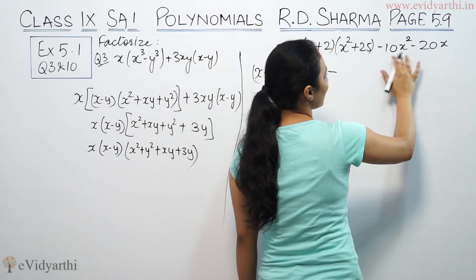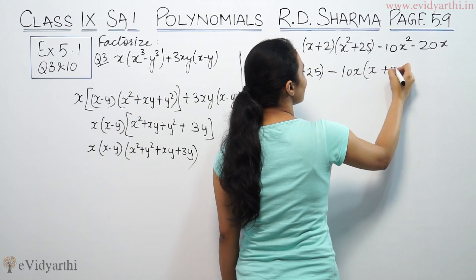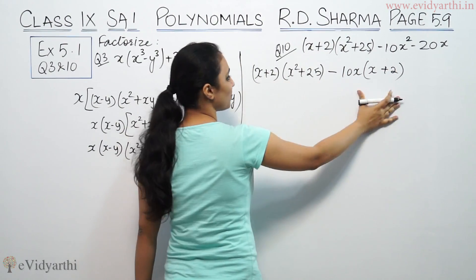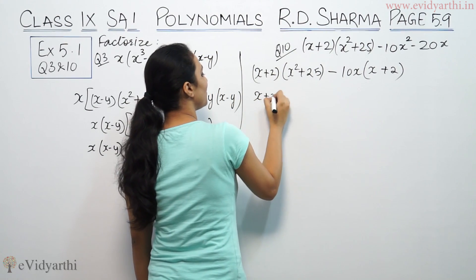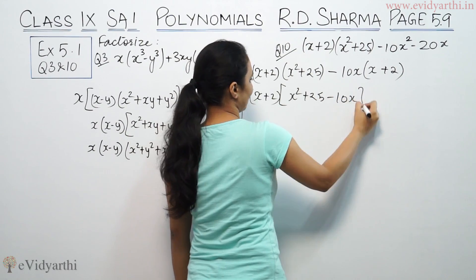Here 10x is common. Underneath x minus minus is plus 2. So (x + 2) appears in this expression and in this also. So take (x + 2) common. Underneath we have x² + 25 - 10x.